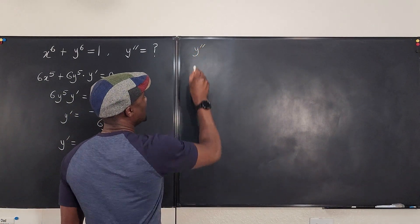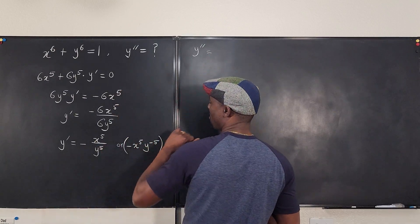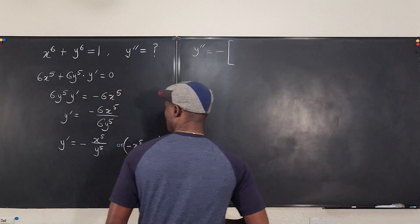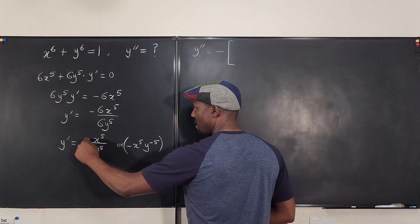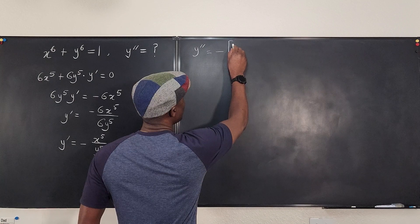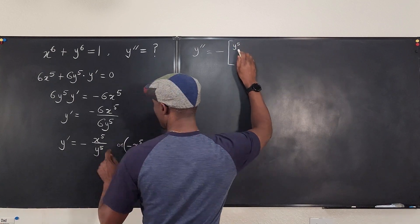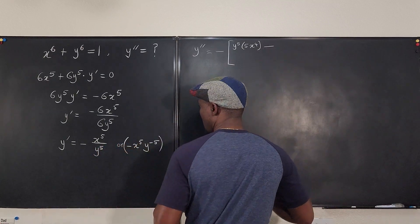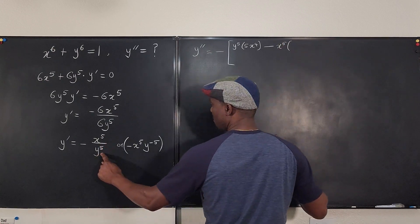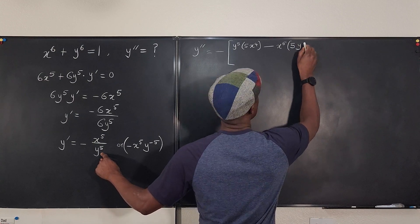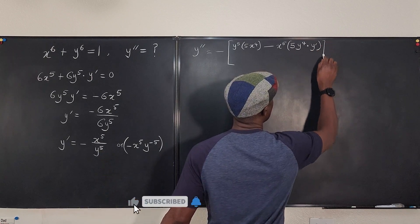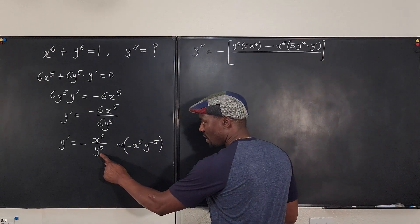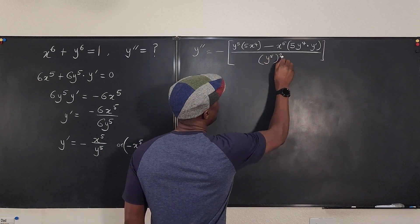So let's take the second derivative, y double prime. We're going to have the minus sign — I usually just leave it outside and begin differentiating on the inside. The quotient rule says it's the denominator multiplied by the derivative of the numerator. So my answer is going to be y to the fifth multiplied by the derivative of the top, which is 5x to the fourth. Minus the top, x to the fifth, multiplied by the derivative of the bottom, which is 5y to the fourth times y prime — don't forget, you have to multiply by y prime when you differentiate y implicitly, since we're differentiating with respect to x. Then divided by y to the fifth squared, which is y to the tenth.